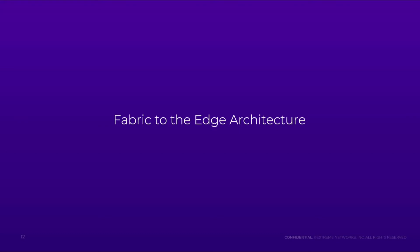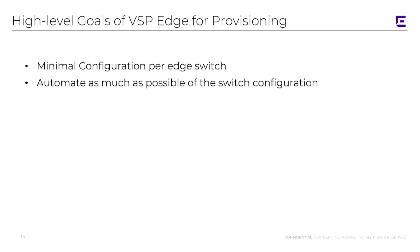Let's talk about the details of the Fabric-to-the-Edge architecture before we look at further deployment details, because this is important. The high-level goals were not just to get Fabric to the Edge, but to have minimal configuration per edge switch. Ideally, once an edge switch goes in, you should never have to touch it again, other than perhaps maintenance or console-type access occasionally. From a large degree, everything else should be done and automated as much as possible within the switch configuration itself, as we saw demonstrated in the first video.